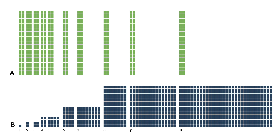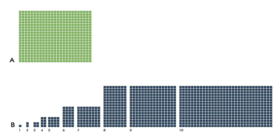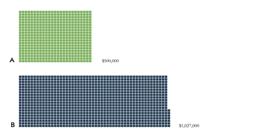You get $512,000 in week 10 with option B. Let's compare the two options. We'll stack the 10 weeks of option A back into one rectangle, and to make the comparison fit on the screen, I'm going to rotate that rectangle of $500,000 by a quarter turn clockwise. Then we'll stack all the blue squares from option B into a rectangle with 20 rows. Option B offers over double the money of option A — you get $1,027,000 with option B.